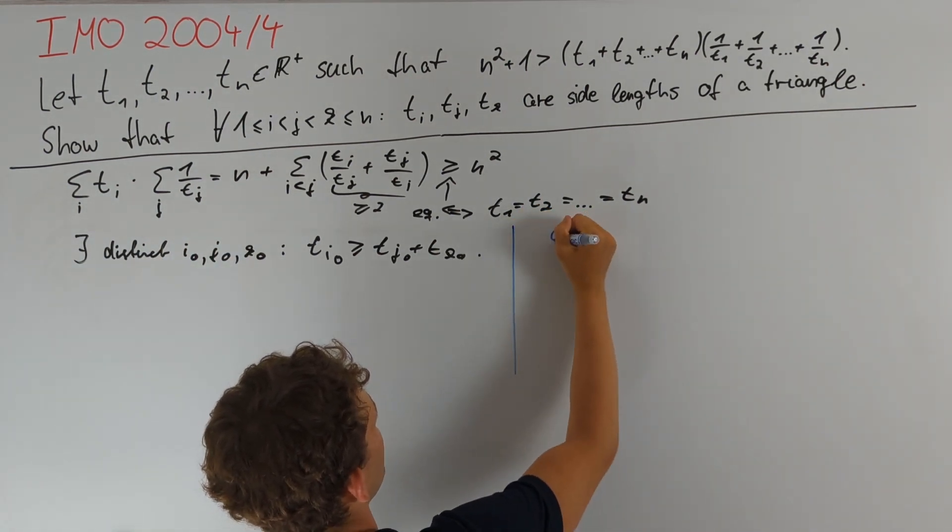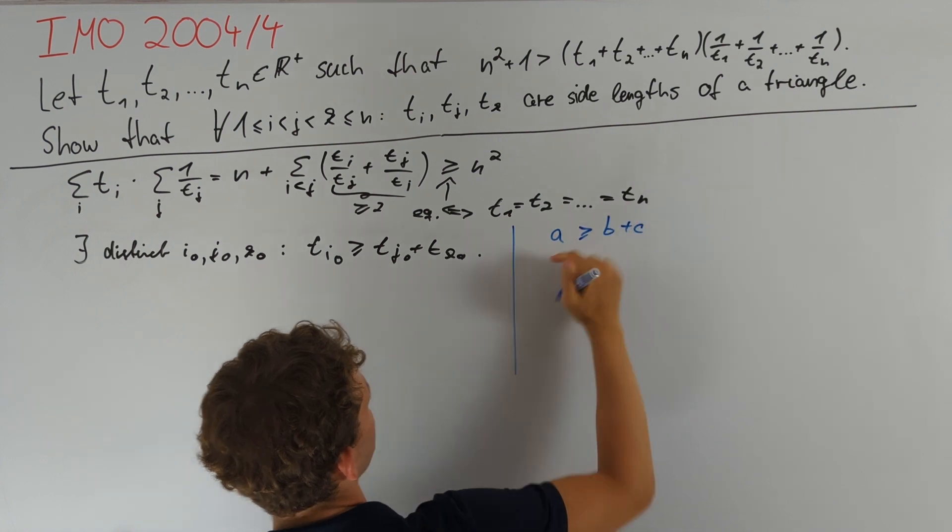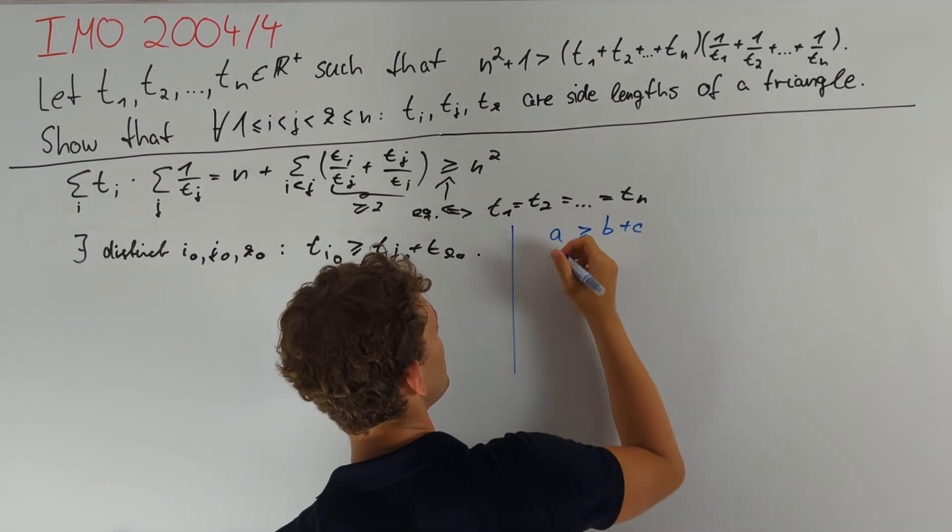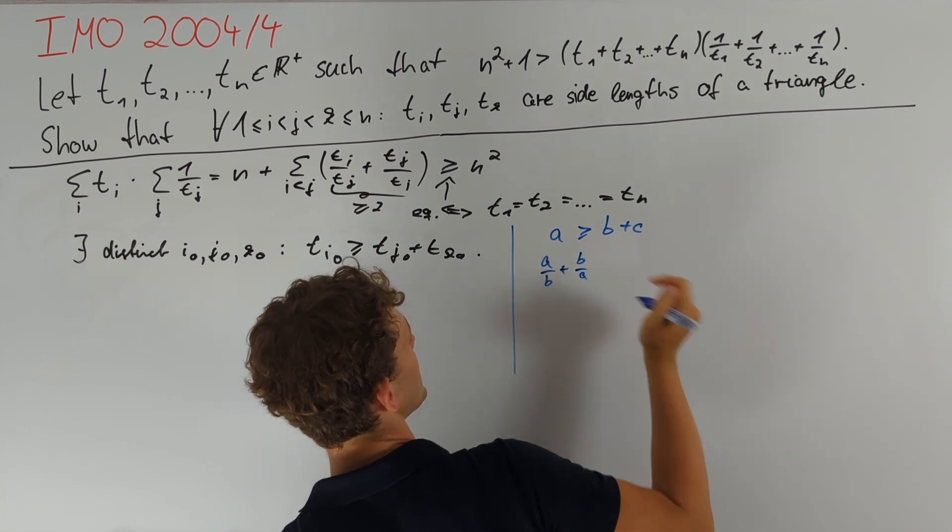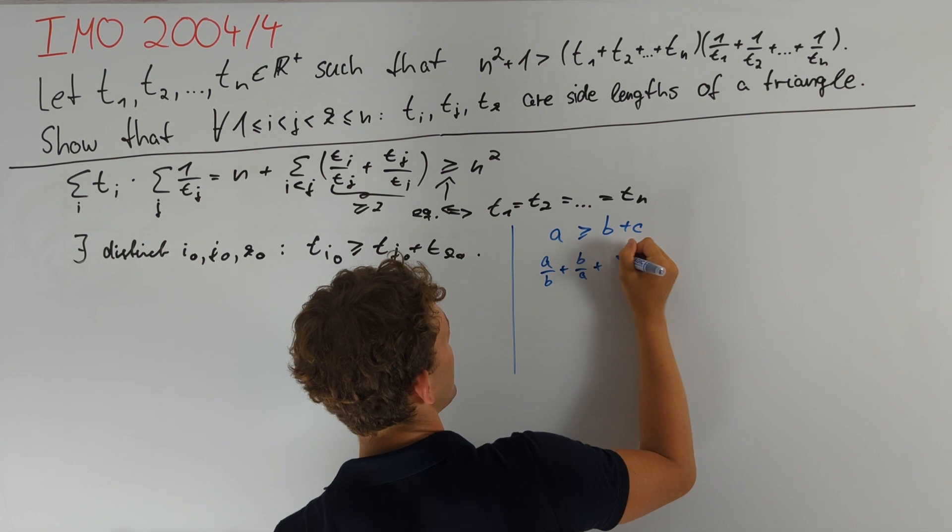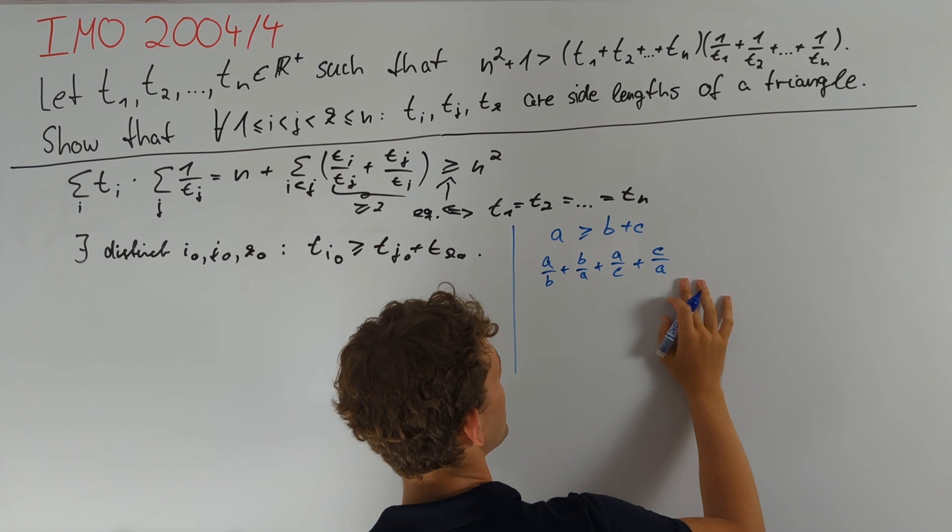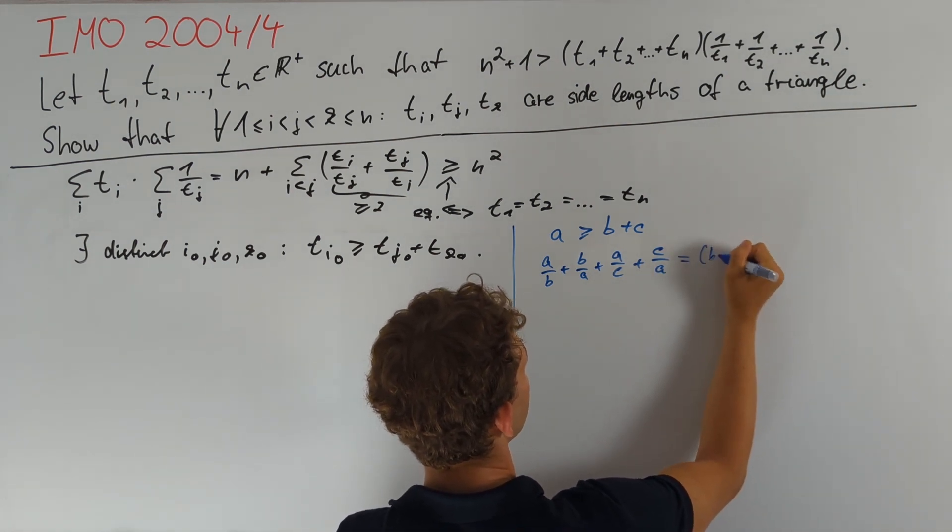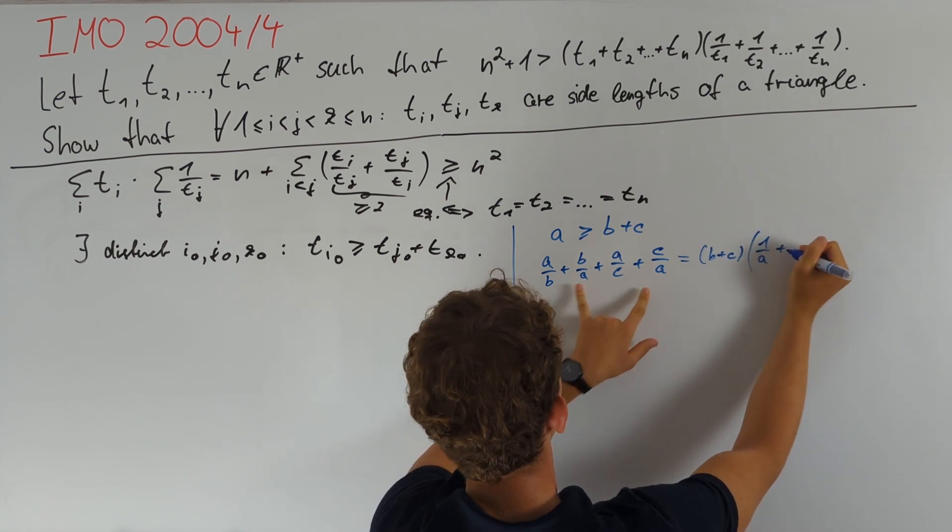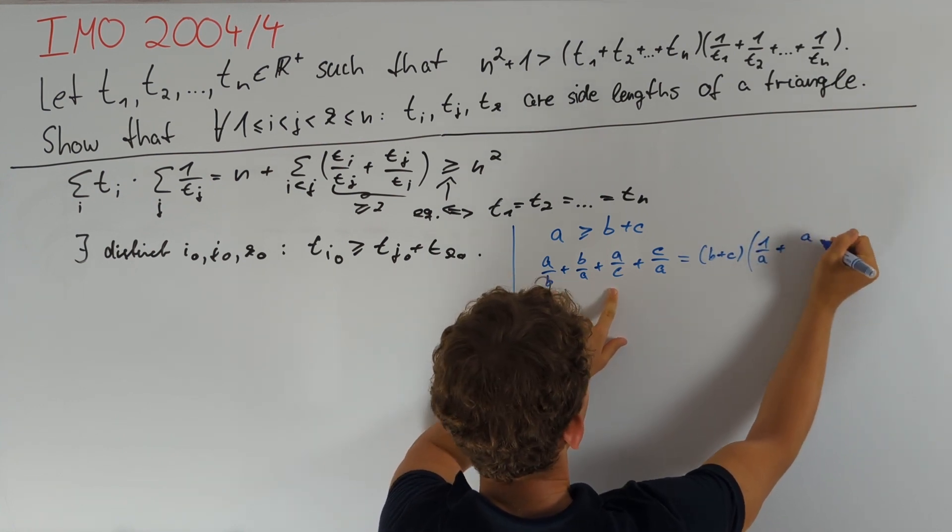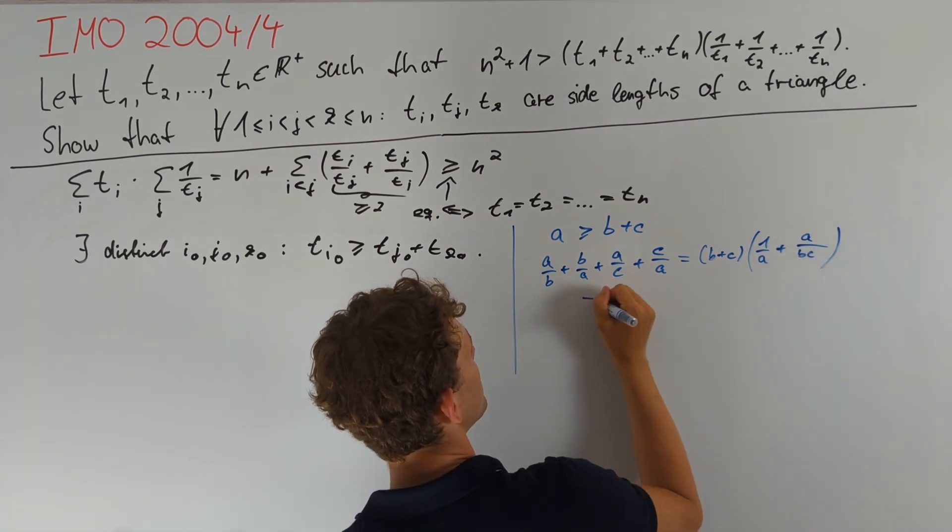For that, we take a look at three numbers a ≥ b + c, where those are positive reals. Since a is at least b + c, we can bound the sum of a/b + b/a and the same terms for a/c + c/a from below. We factor out b + c to obtain that this equals (b + c)(1/a + a/(bc)).